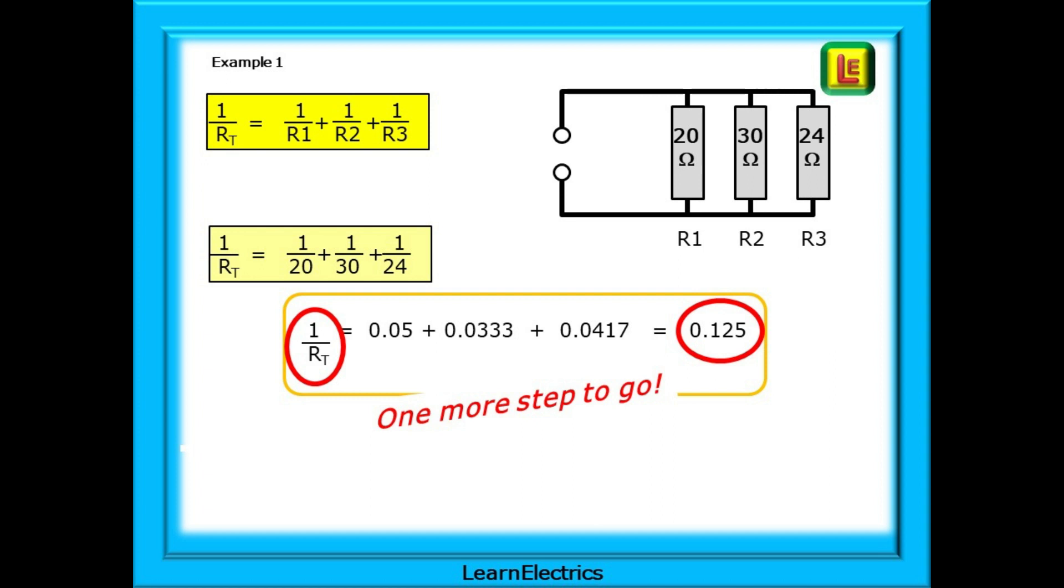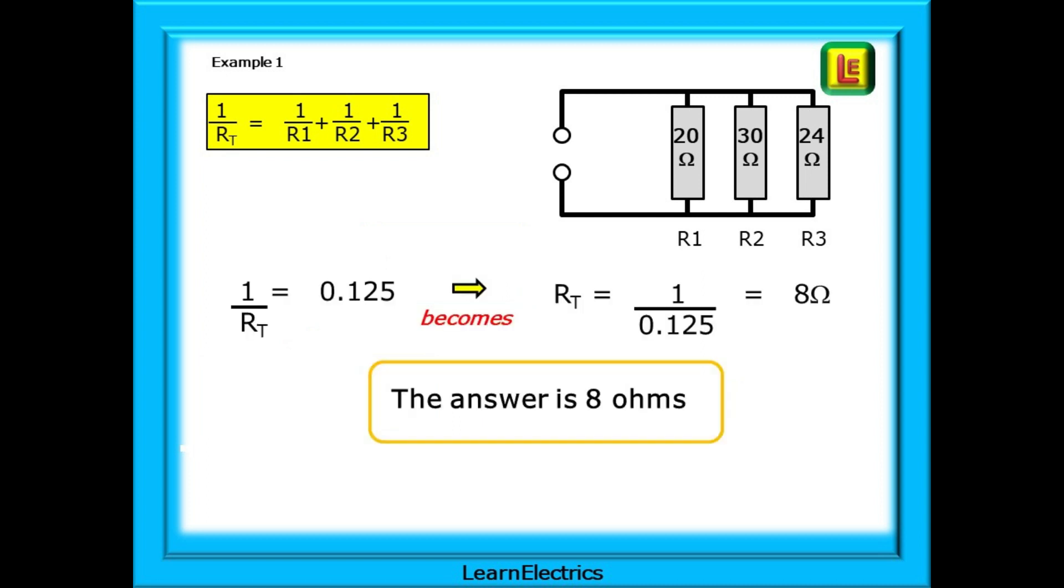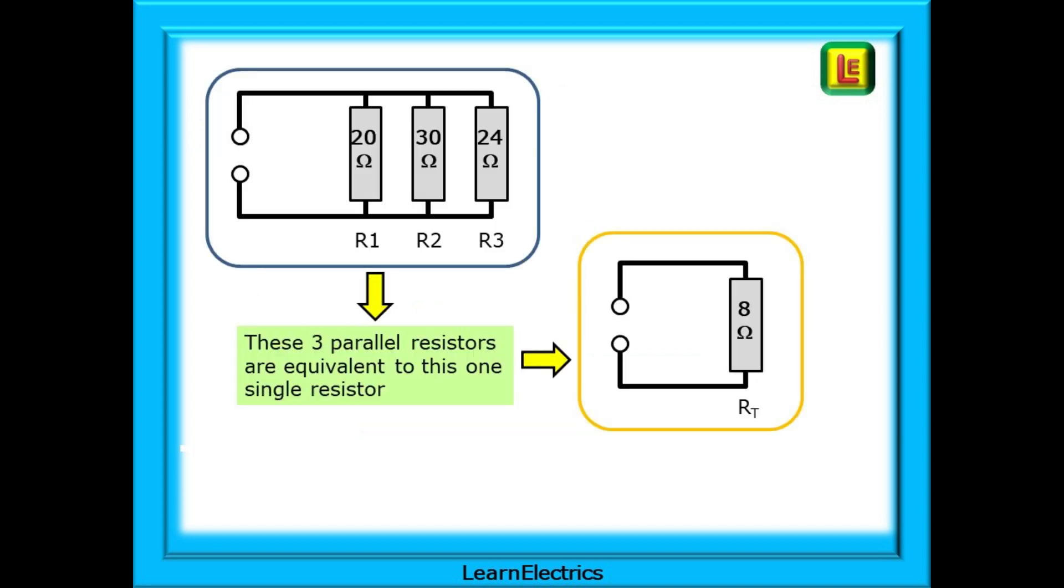So 1 over RT is 0.125. But, that's not the end. There is one more step to go. We have 1 over RT, but we need RT on its own. So turn things upside down to find RT on the top. 1 over RT equals 0.125. And this will become RT equals 1 over 0.125. And putting this into a calculator, we have our answer 8 ohms. Notice that RT, the answer, is smaller than the smallest of the three original resistors. The three parallel resistors are equivalent to this one single resistor. Job done.